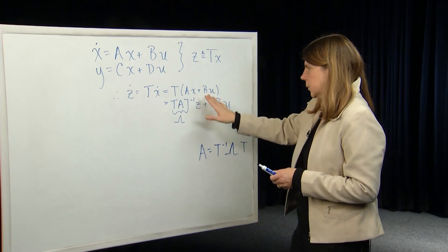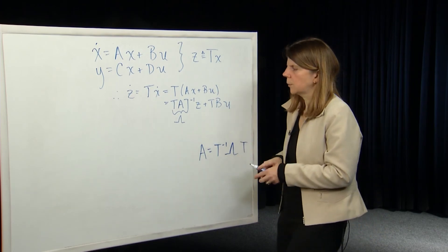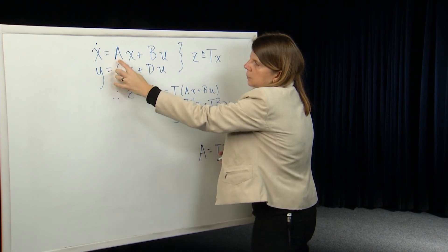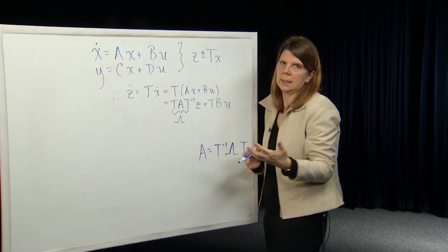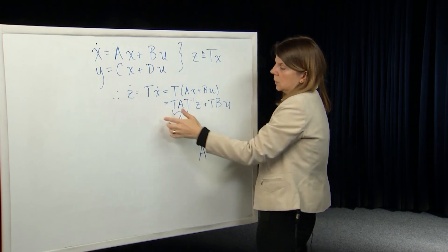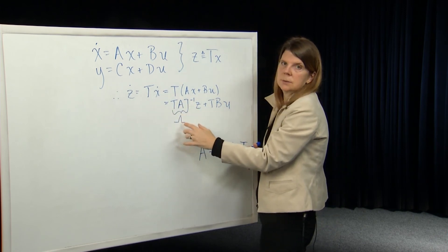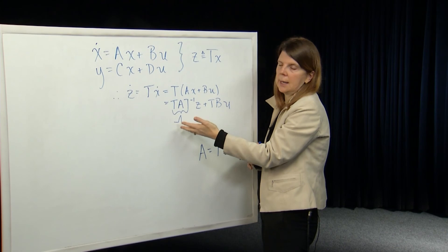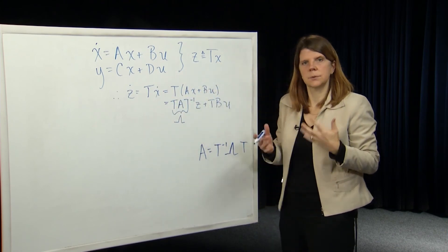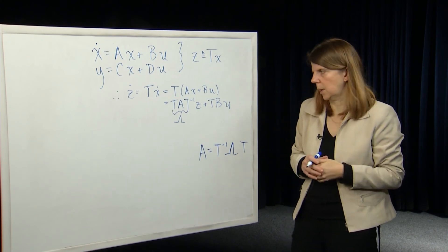So, it's similar to what we've just done. We could either keep the system in its original state and compute e to the At by diagonalizing A, or we could perform a state transformation to a new system in which the new form of A is diagonal, solve for this system, and then transform back to the state x. So the same type of property here.